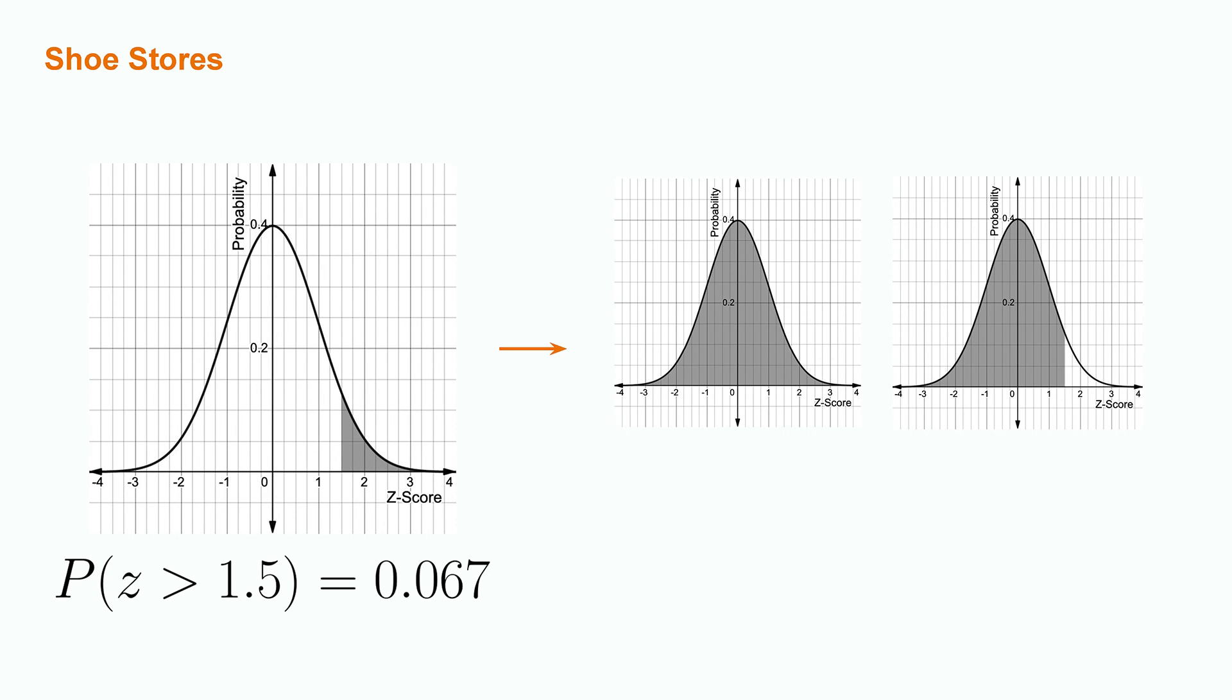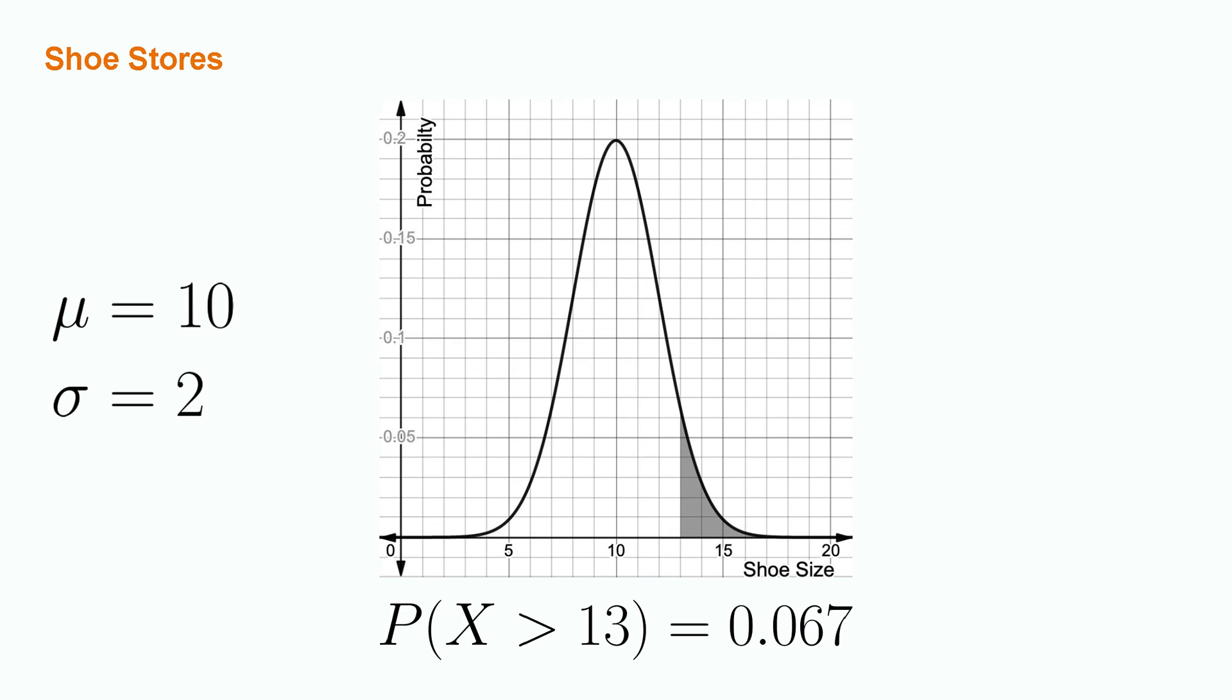This allows us to finally return to the shoe store, where we can say that the probability of having a customer with a shoe size of greater than 13 inches is about 0.067. Hopefully all that switching from a specific distribution for shoe size to the standard normal via the z multiplier makes sense.